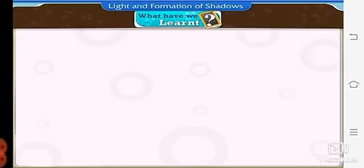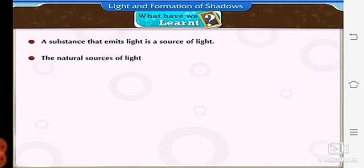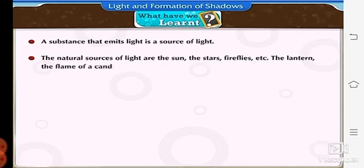A substance that emits light is a source of light. The natural resources of light are the sun, the stars, fireflies, etc. The lantern, the flame of candle, an electric bulb, etc. are artificial sources of light.